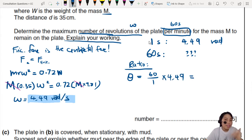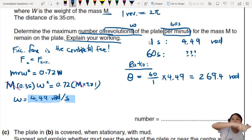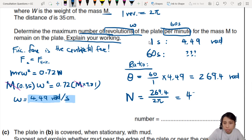So 4.49 is here, this would be 60 over 1 second. After 60 seconds, this thing would have rotated a total of about 269.4 radians. How many revolutions is that? One revolution is 2π radians. The number of revolutions will be 269.4 divided by 2π, which gives about 43 per minute.